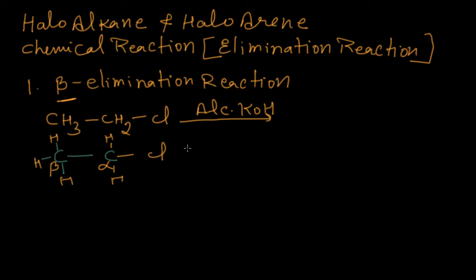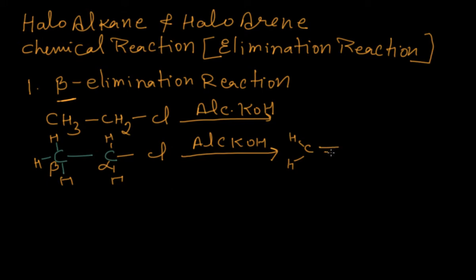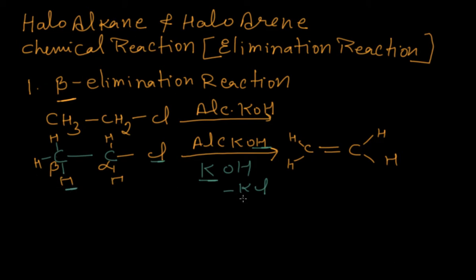The beta carbon is the one next to the alpha carbon. When we react chloroalkane (chloroethane) with alcoholic KOH, we get CH2=CH2. One hydrogen will be removed from the beta carbon and a double bond will form. Taking KOH here, this K and Cl — KCl will be removed, and then the OH and the beta hydrogen which is attached on the beta carbon will form water.